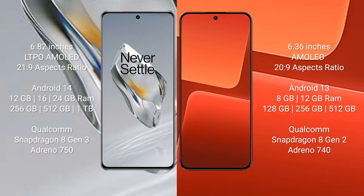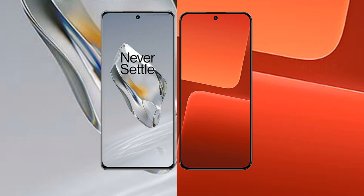The OnePlus 12 comes with 12GB, 16GB, or 24GB RAM and 256GB, 512GB, or 1TB internal storage, powered by the Qualcomm Snapdragon 8 Gen 3 processor with Adreno 750 GPU. The Xiaomi 13 comes with 8GB or 12GB RAM and 128GB, 256GB, or 512GB internal storage, with a Snapdragon 8 Gen 2 processor and Adreno 740 GPU.